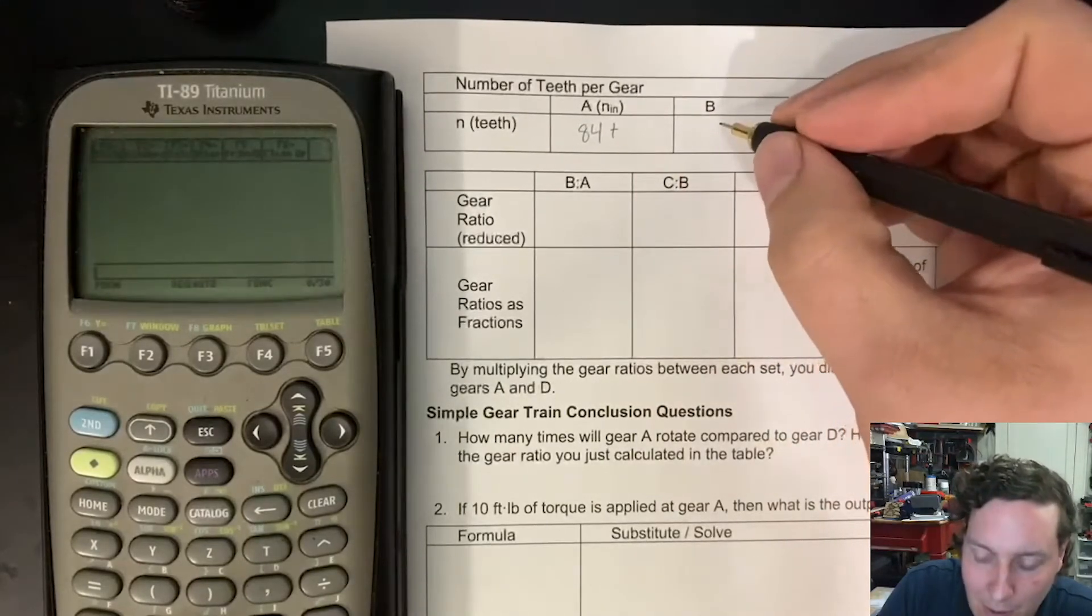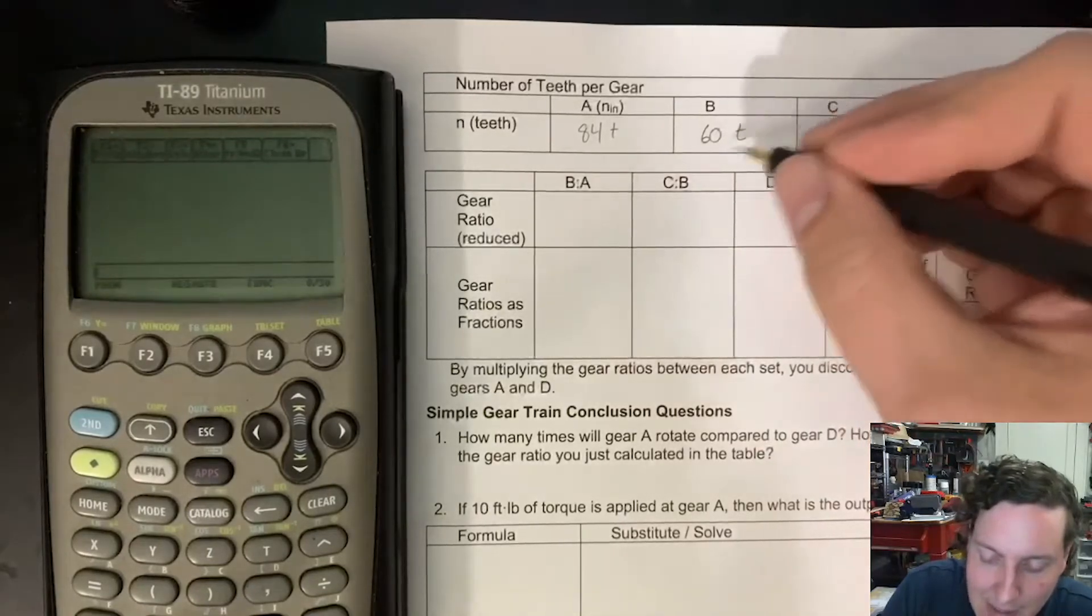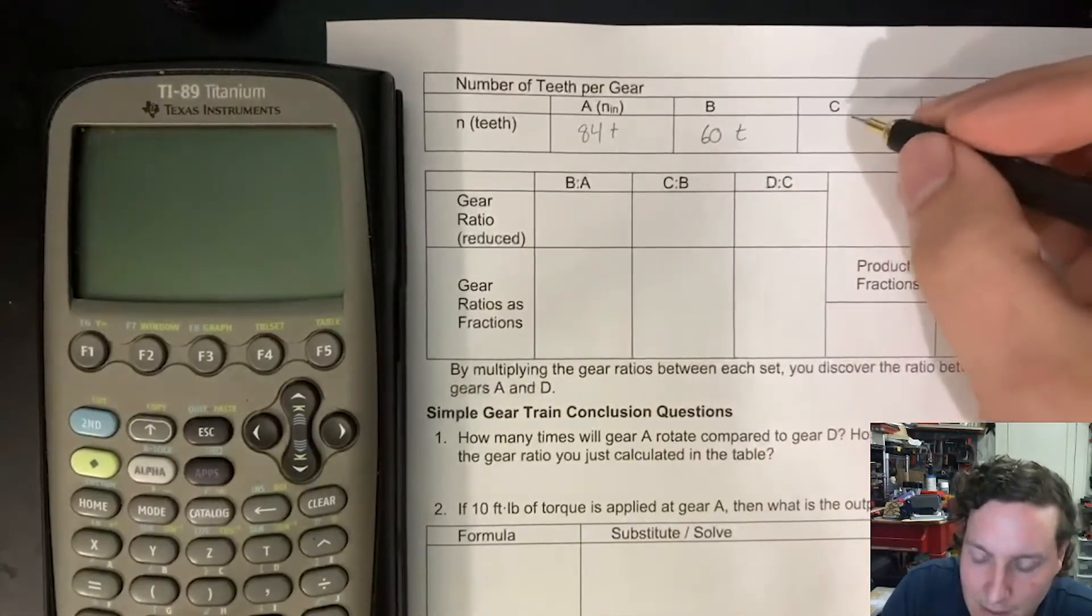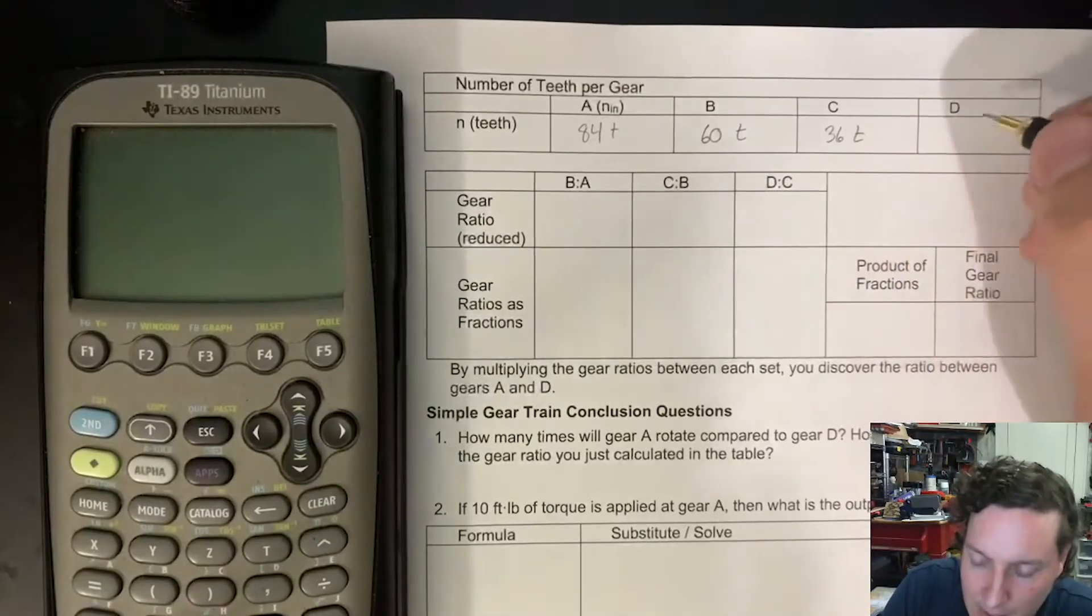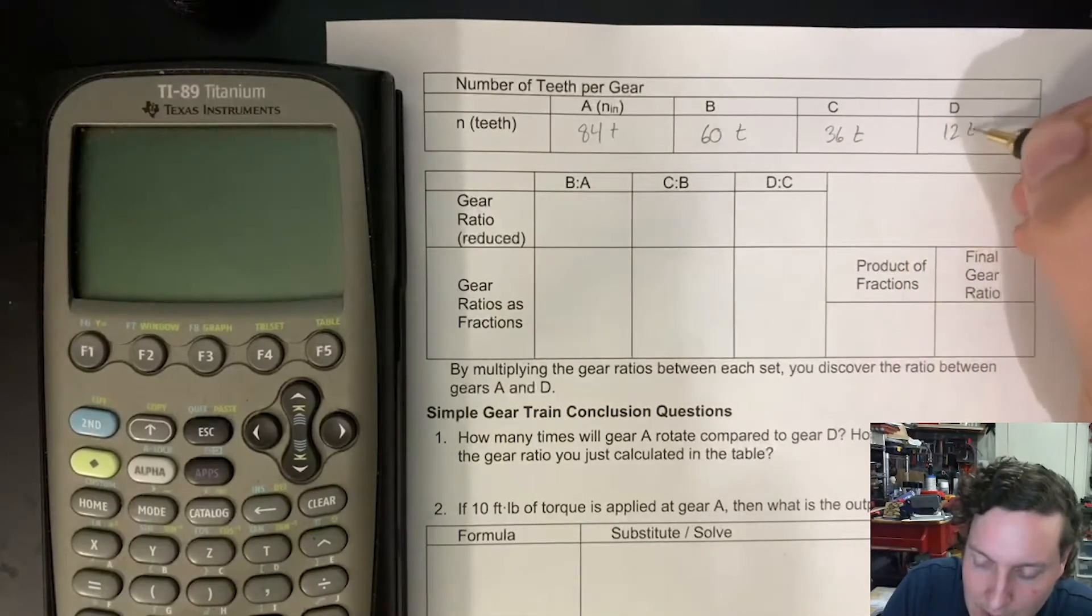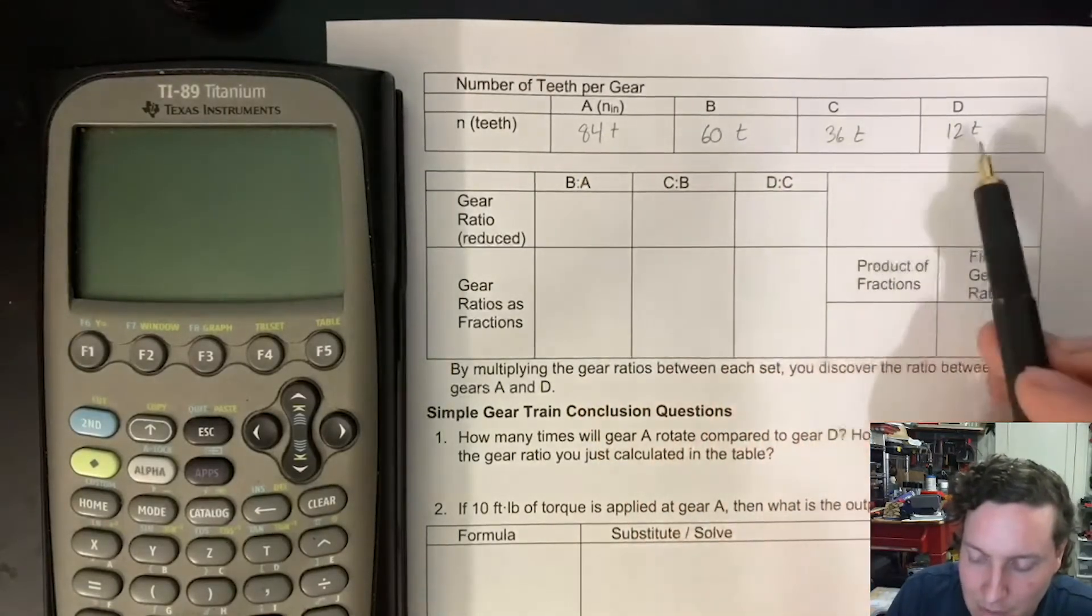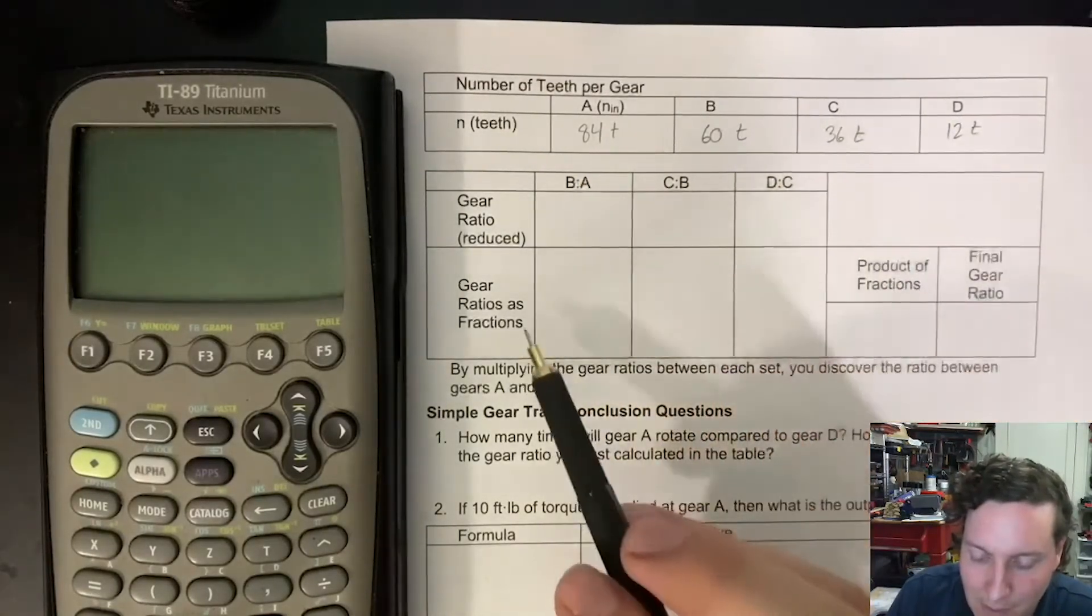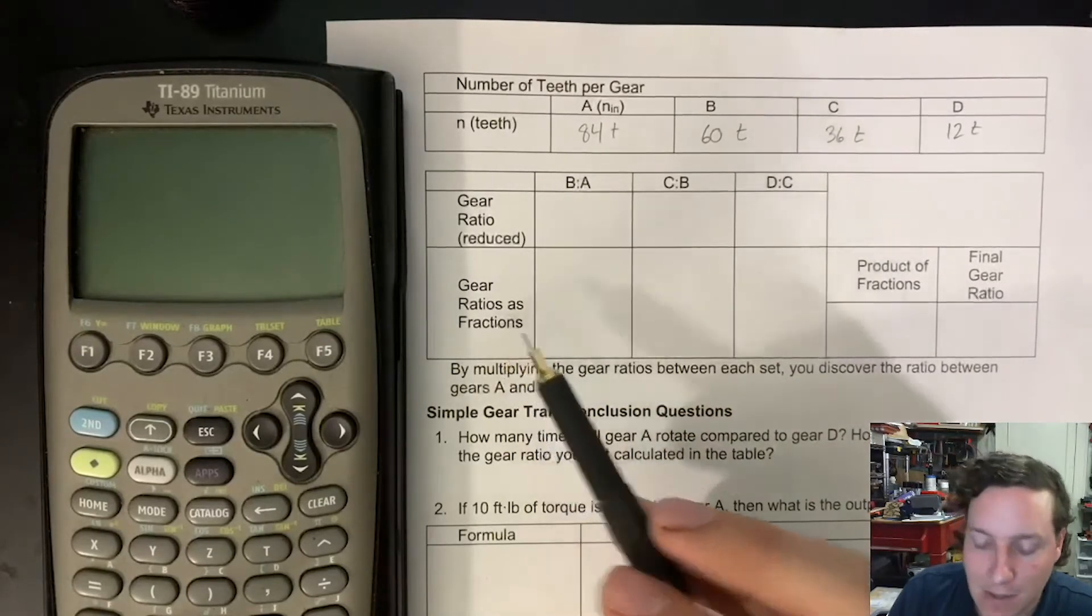We know that there are 60 teeth in the second of the gears, in the third size 36 teeth, and then in the last one 12 teeth. Now something that you may have caught on is these are all multiples of 12 and that's going to help us when we get down here to the gear ratios.